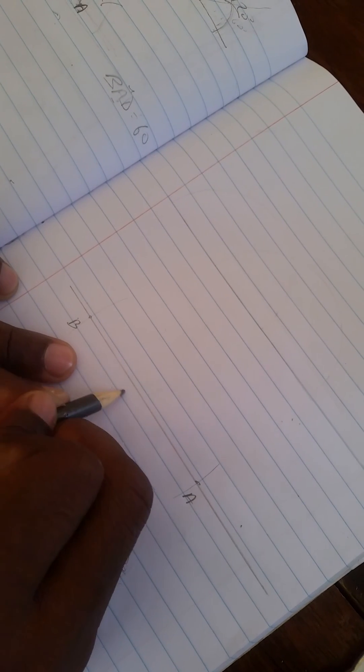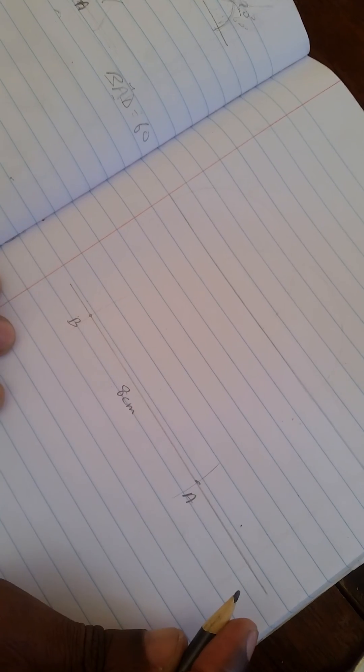Okay, so quickly, I'll consider this to be my B, and this to be my A, and it should be 8 centimeters.